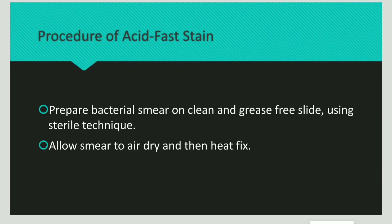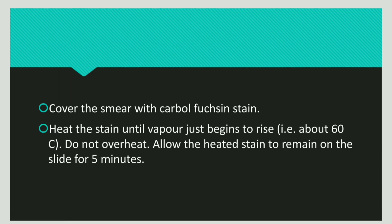Now let us discuss the procedure of acid-fast staining. First, prepare a bacterial smear on a clean slide, then allow it to air dry and heat fix. Next, cover the smear with carbol fuchsin and heat the stain until vapor begins to rise, that is to a temperature of 60 degrees Celsius. Make sure overheating is avoided, and the heated stain should remain on the slide for about 5 minutes.